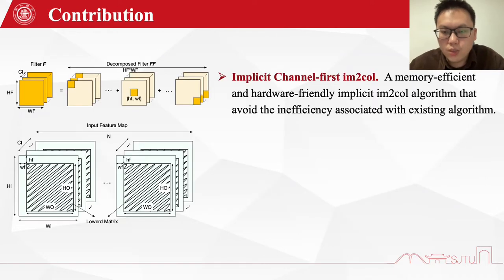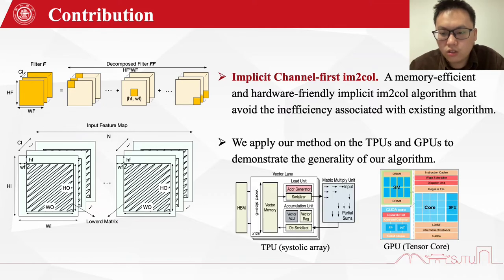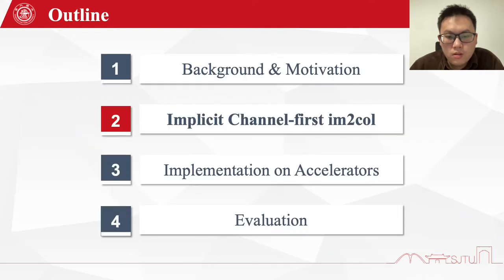We propose implicit channel-first image-to-column: a memory-efficient and hardware-friendly implicit image-to-column method that avoids the inefficiencies associated with existing algorithms. We apply our method on both TPUs and GPUs to demonstrate the generality of our algorithm. Now I will talk about our implicit channel-first method and how we avoid the inefficiency associated with existing methods.